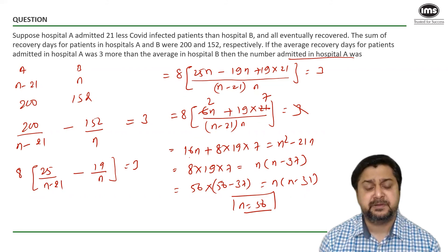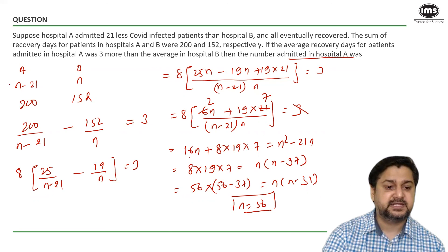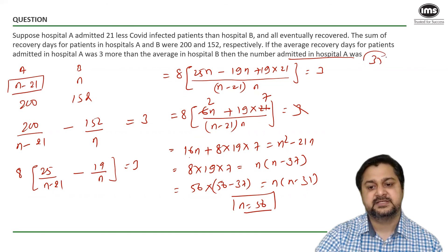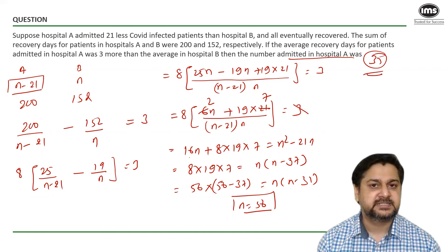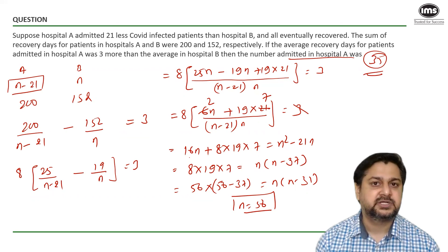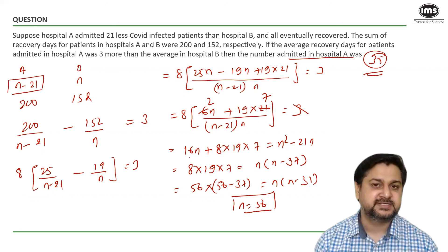What is the number of patients admitted in hospital A? So 56 minus 21 would give us 35. So 35 is our answer. I hope everybody is clear. If you have understood the question please try this replica question and write your answers in the comment section.